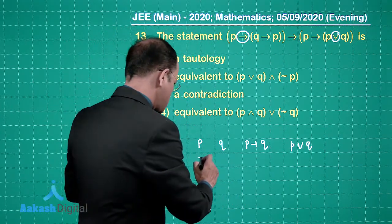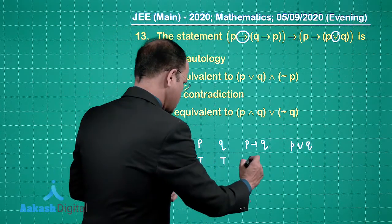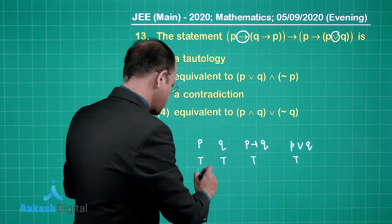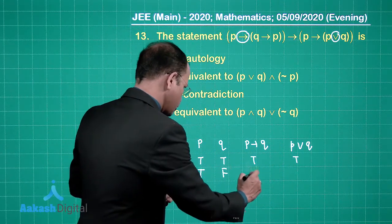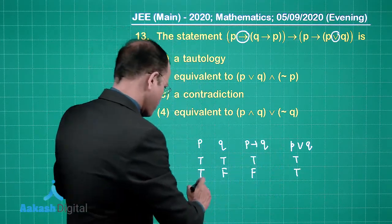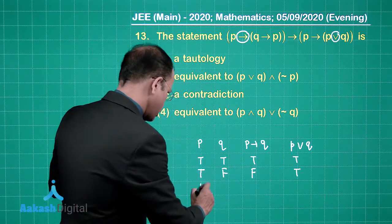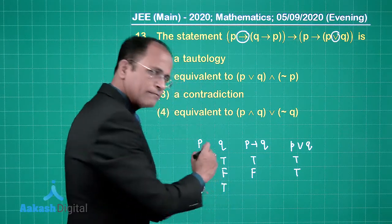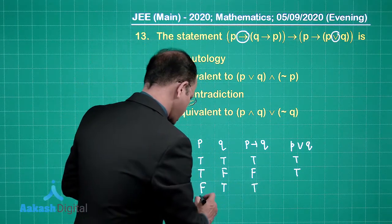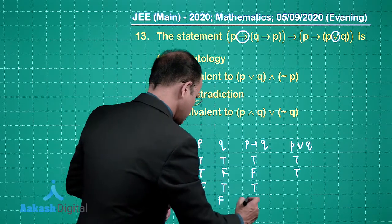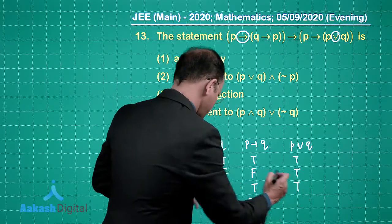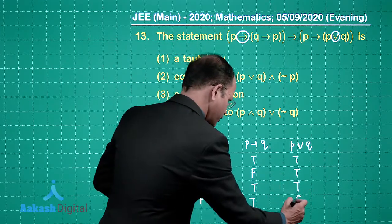For the truth table: when p is True and q is True, (p→q) is True and (p∨q) is True. When p is True and q is False, (p→q) is False and (p∨q) is True. When p is False and q is True, (p→q) is True. When p is False and q is False, (p→q) is True and (p∨q) is False.